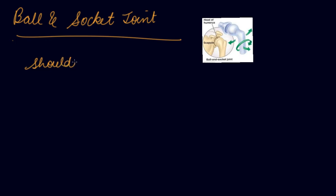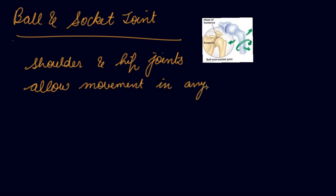Now a ball and socket joint. Your shoulder, your hip joints allow movement in any direction. In such joints, the end of one of the bone is round like a ball. You can see this. This part is round like a ball.